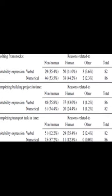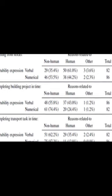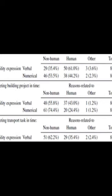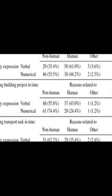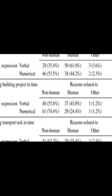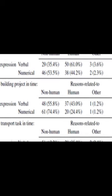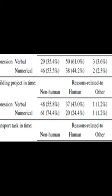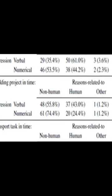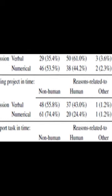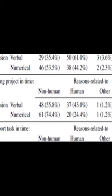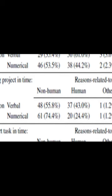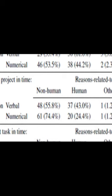People often experience uncertainty in their daily lives, which can be either animate or inanimate. Animate uncertainty refers to situations involving living things, such as the outcome of a game or the success of a business venture. Inanimate uncertainty involves non-living things, such as the outcome of a weather forecast or the performance of a machine.